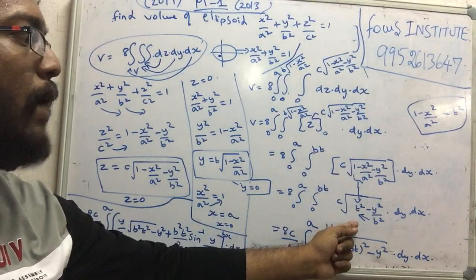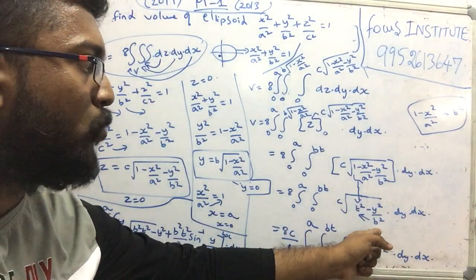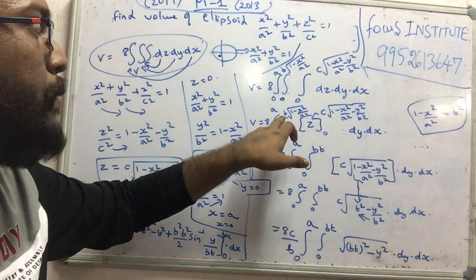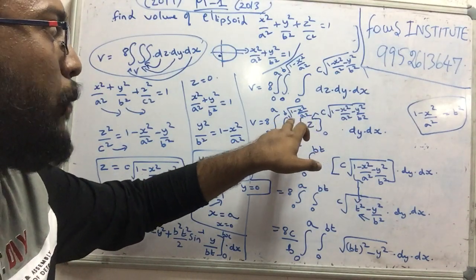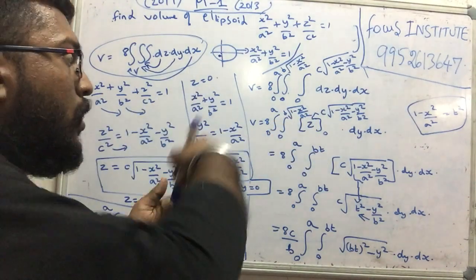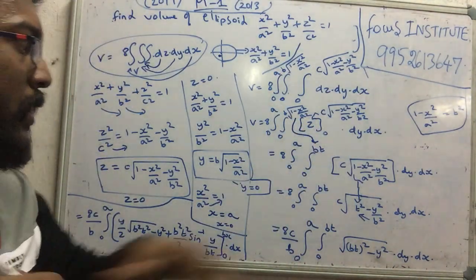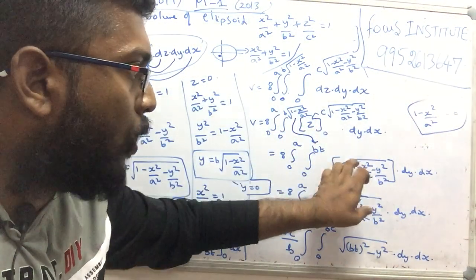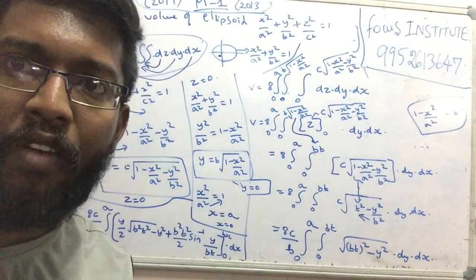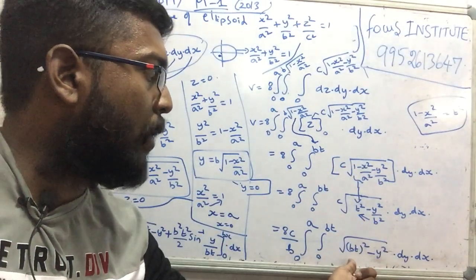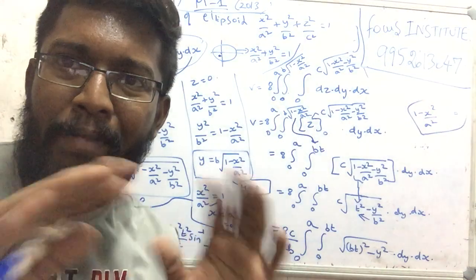Then t² is minus y by b². Then I am going to b into the root of 1 minus x² by a², then I am going to b into t².